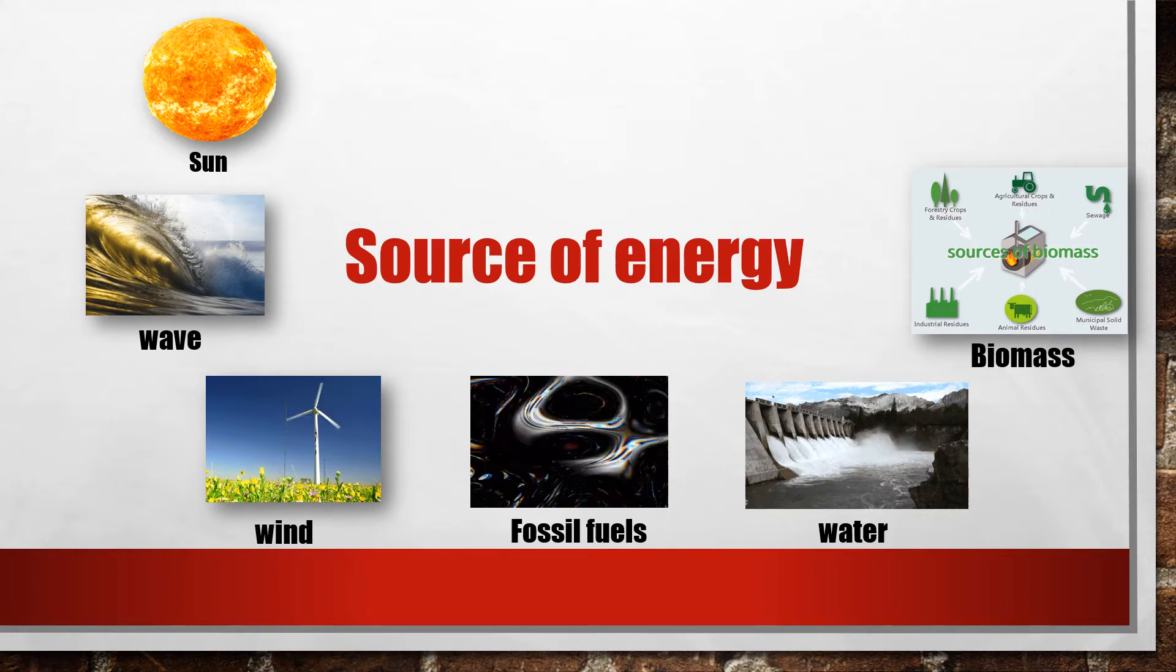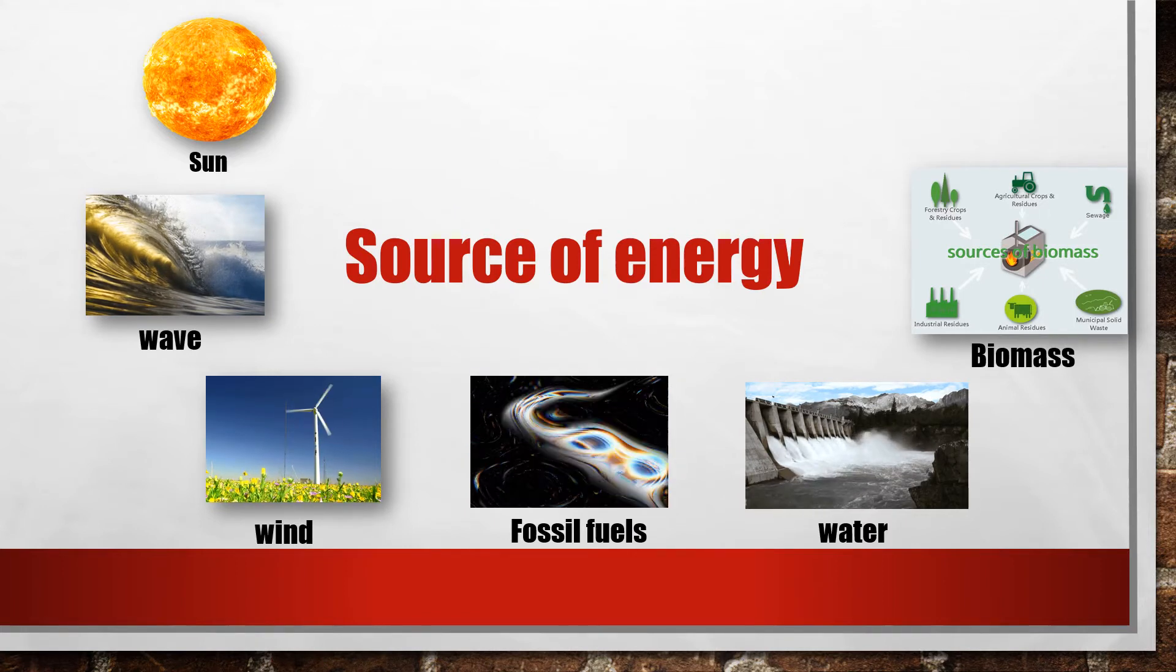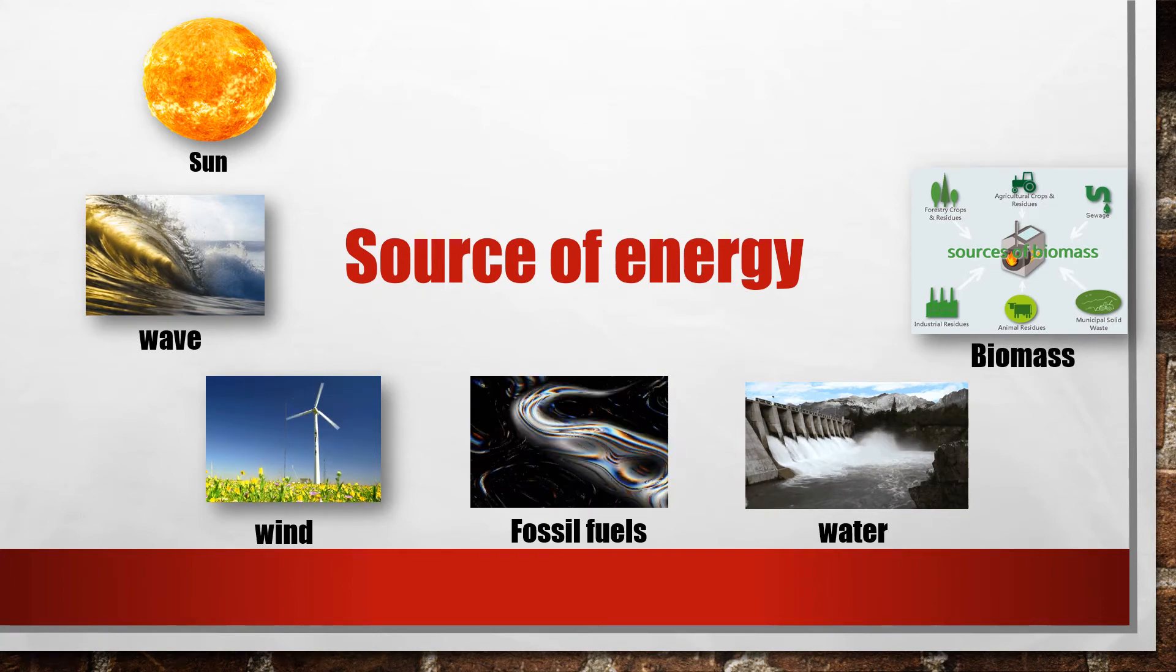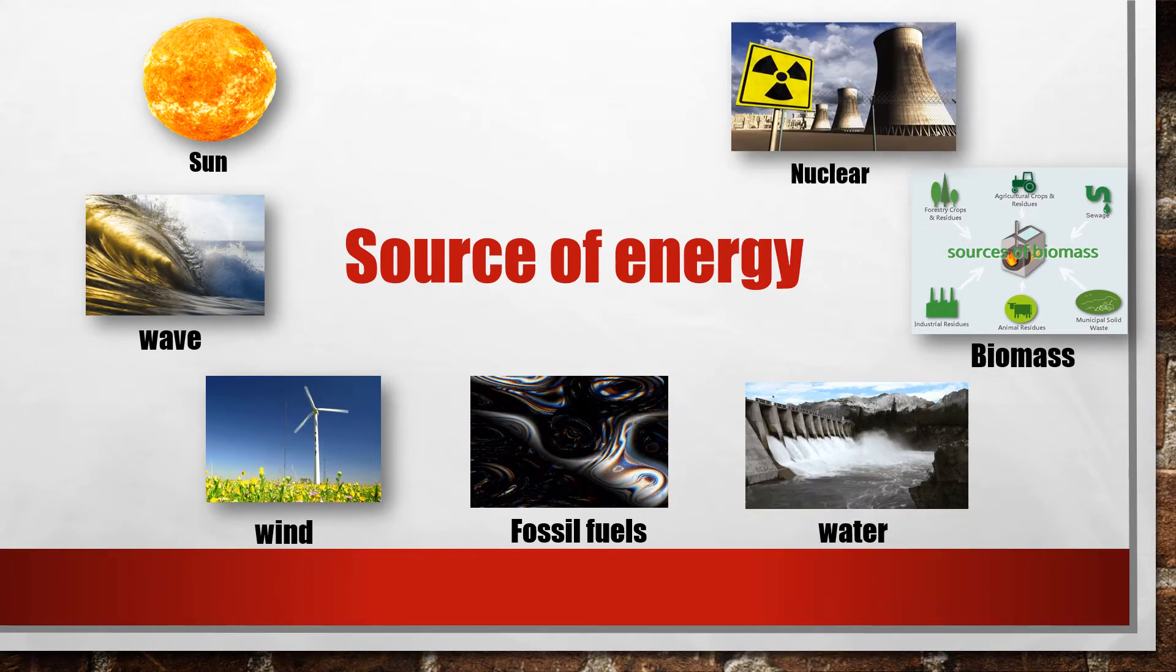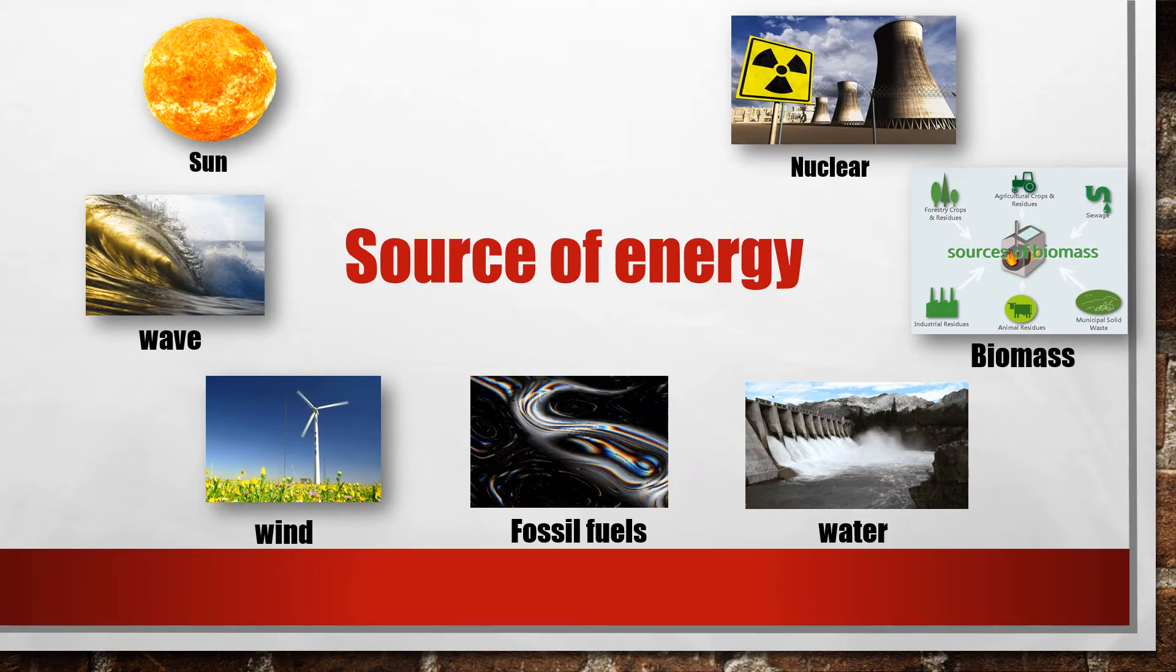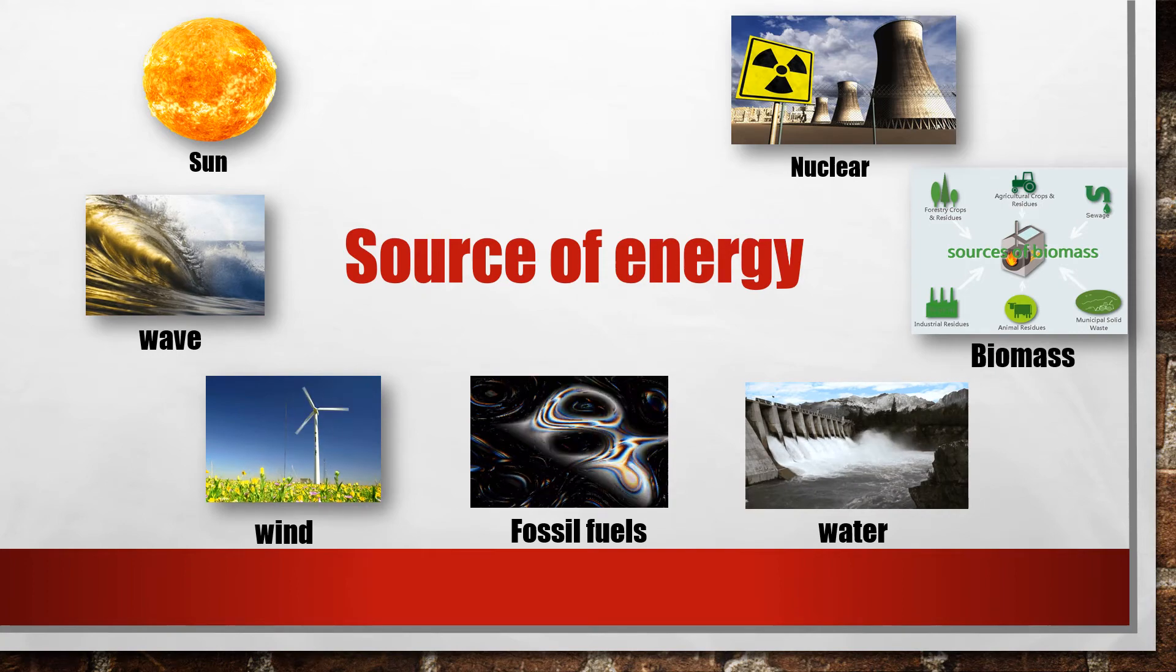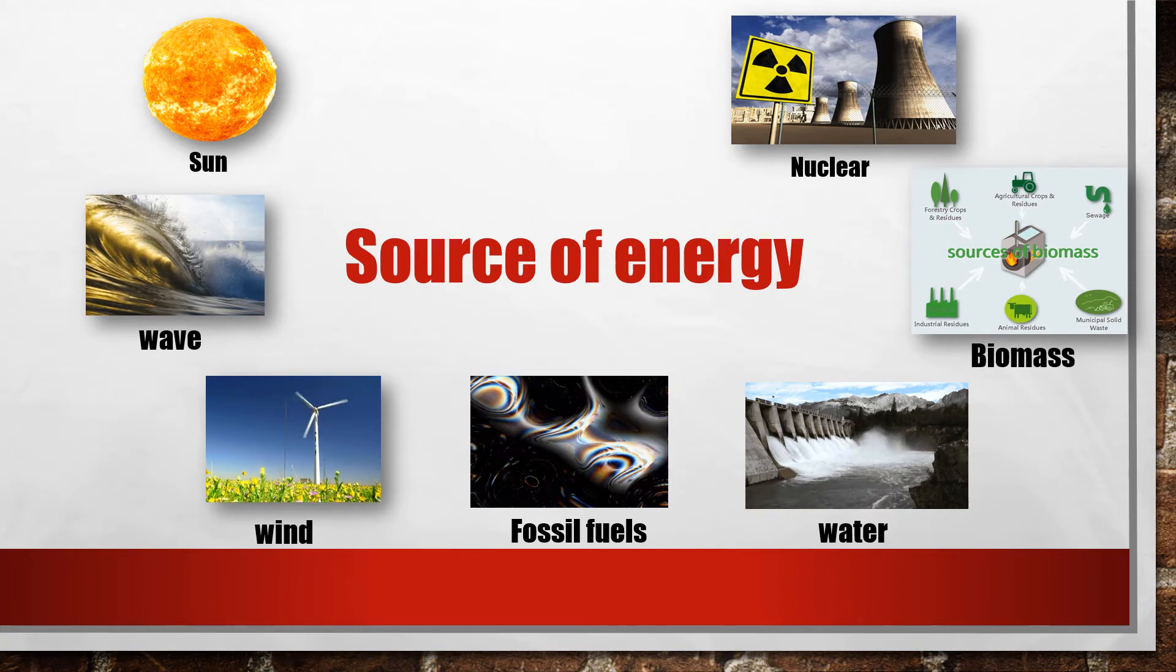Biomass is a substance from plants or animal tissues used to produce fuel and generate electricity. Nuclear substances such as uranium are used to generate electricity at nuclear power stations.